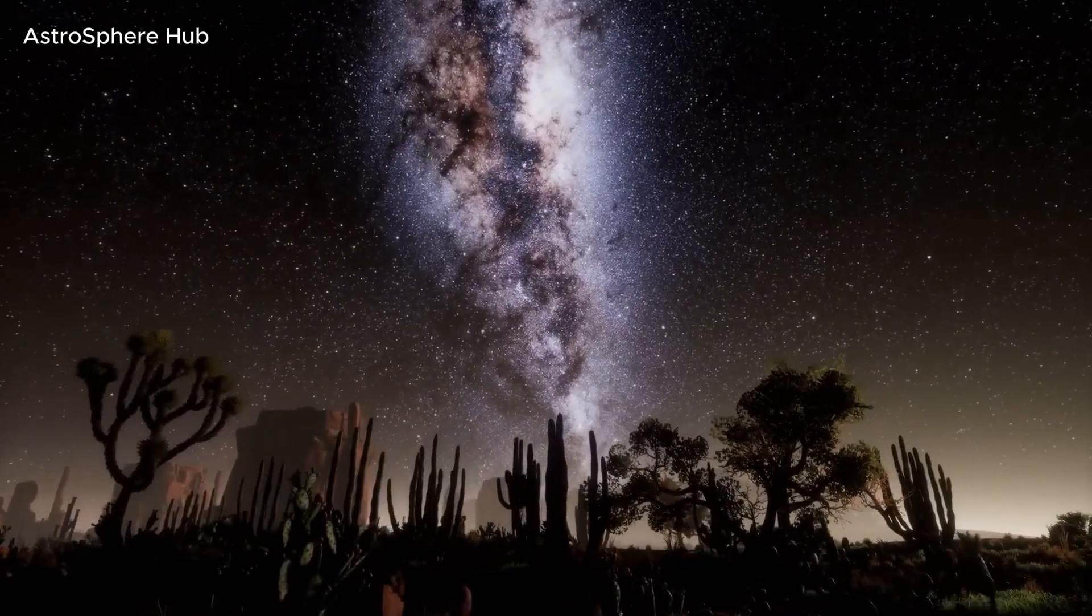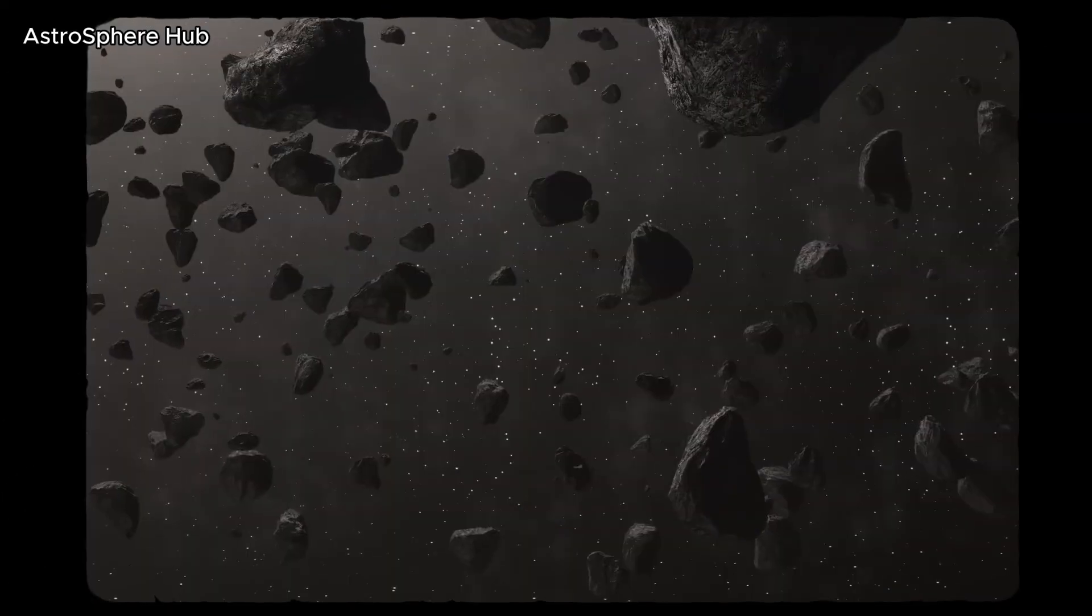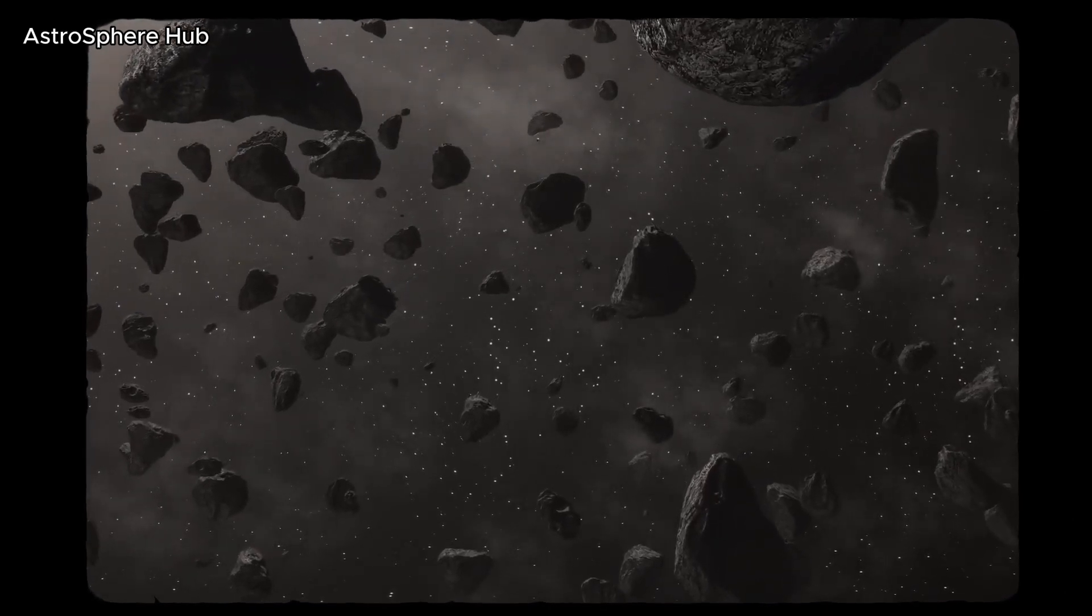Using the transit observation method, the scientists managed to find out not only the size, but also the position of the rings around the planet.